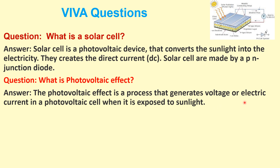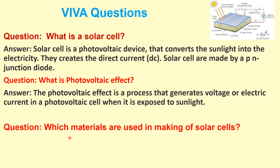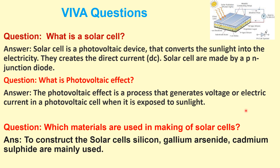What is the photovoltaic effect? The photovoltaic effect is a process that generates voltage or electric current in a photovoltaic cell when it is exposed to sunlight. Which materials are used for making a solar cell? To construct a solar cell, silicon, gallium arsenide, and cadmium sulfide are mainly used.